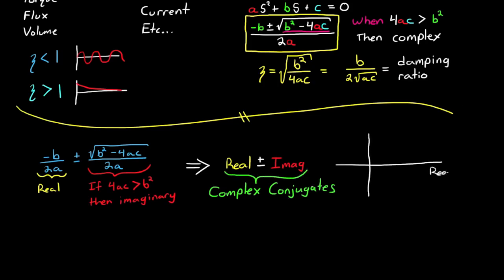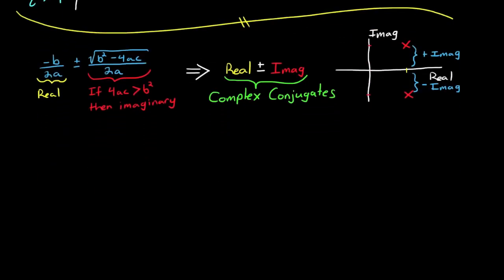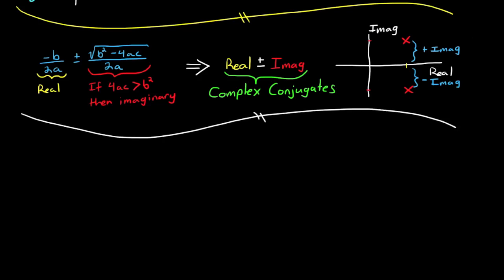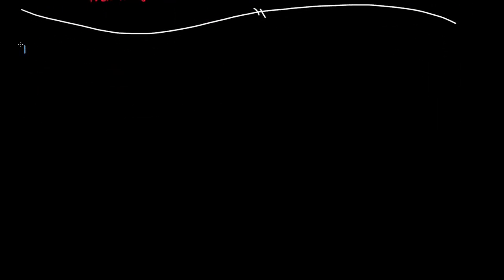We can show this graphically on a real imaginary axis like this. The two complex roots will always be mirror images of each other across the real line. And this is why for real physical systems, complex roots will always come in pairs, and always be complex conjugates of each other. Now that we have that understanding, let's get to the math, and learn how to draw the frequency response of a system whose transfer function have two poles that are complex conjugates.